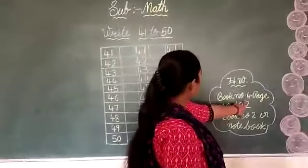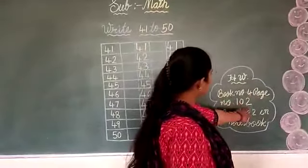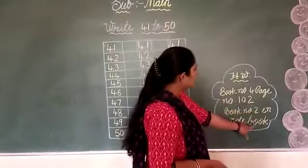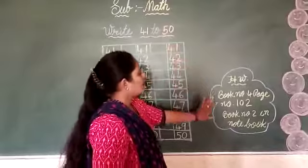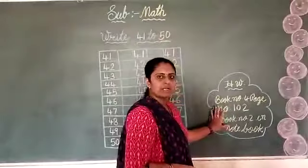Now in book number 4, page number 102, and book number 2 in your notebook, write what we taught you, 41 to 50. You have to do this as homework. Bye kids, okay.